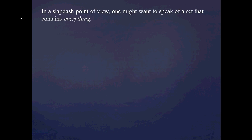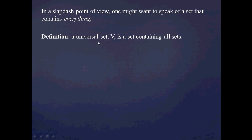For aesthetic reasons, one might want to talk about a set which contains everything one could possibly speak about — a set which would contain all of the sets in the set-theoretic universe. Formally, we might say that such a universal set, which I'll denote by V, is a set containing all sets. That is to say, if you can find a set X, then X belongs to V, and all members of V are sets.